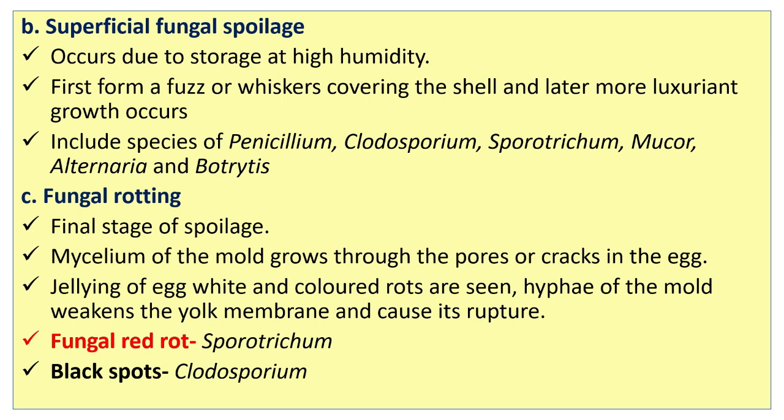Fungal rotting is the final stage of spoilage. Mycelium of the mold grows through holes or cracks in the egg. Gelling of egg white and colored rots are seen. Hyphae of the mold weaken the yolk membrane and cause its rupture. Fungal red rot is caused by Sporotrichum; black spots are caused by Cladosporium.